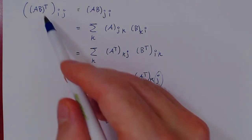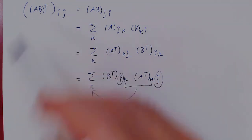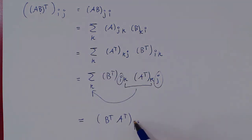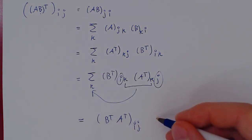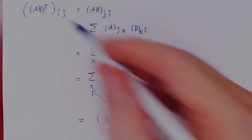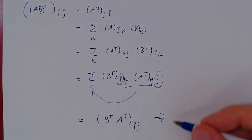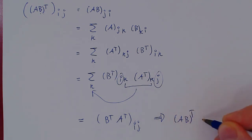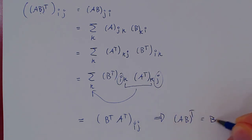The entries of matrix AB transposed are the same as the matrix B transposed times A transposed. These two matrices have the same corresponding entries, therefore they're equal. And this completes the proof.